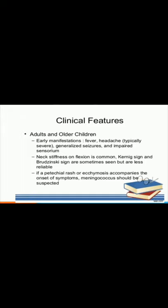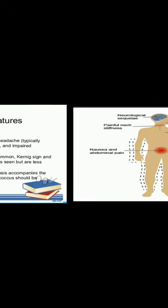Kernig sign occurs when the patient's knees and hips are flexed and extension of the knees causes pain. Whereas in Brudzinski sign, neck stiffness causes the patient's hips and knees to flex when the neck is flexed passively. If a particular rash or ecchymosis is present, then meningococcus should be suspected as a cause of meningitis.